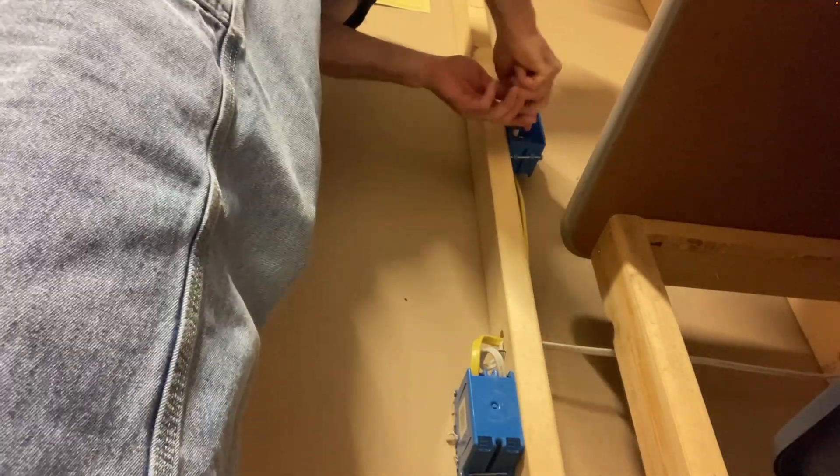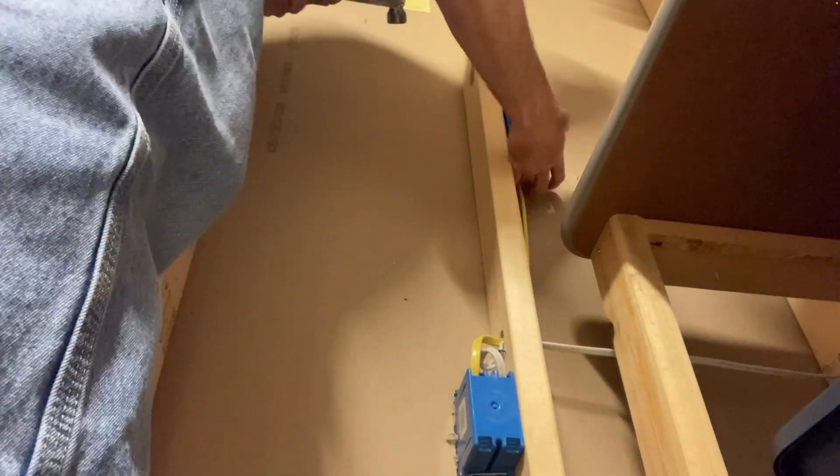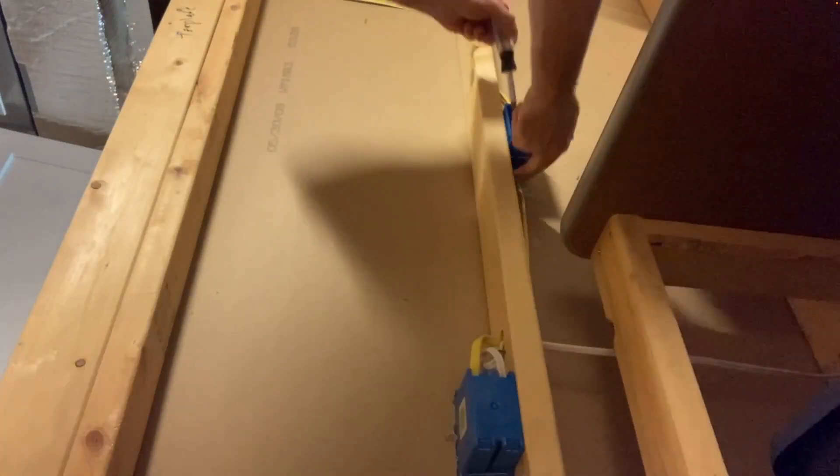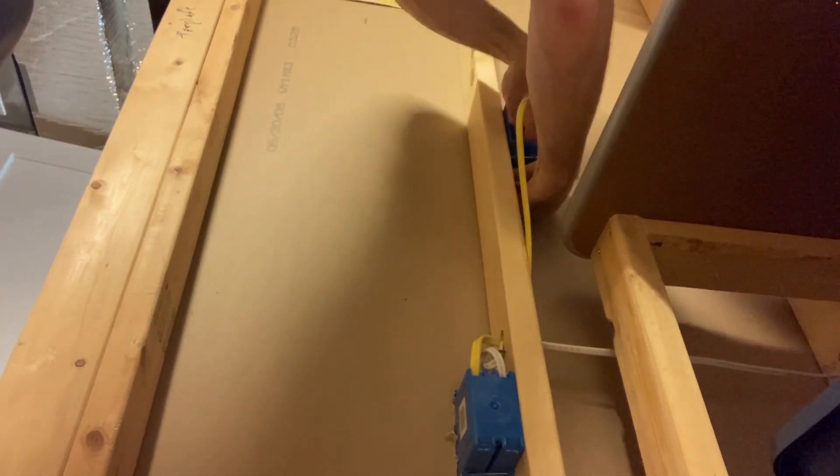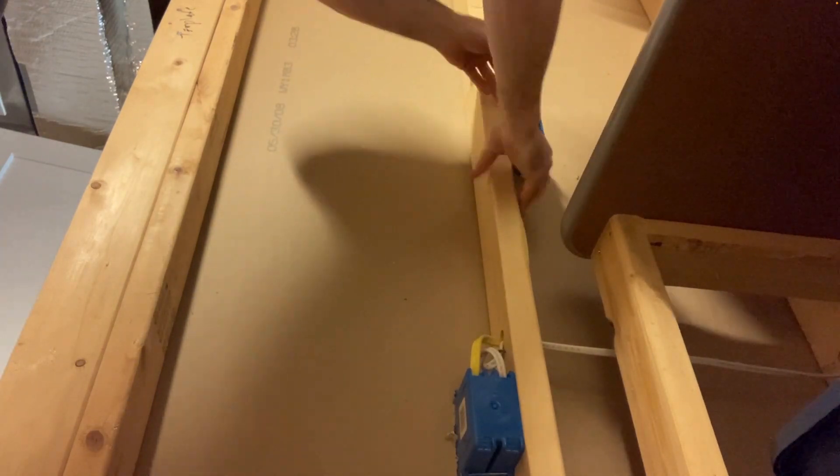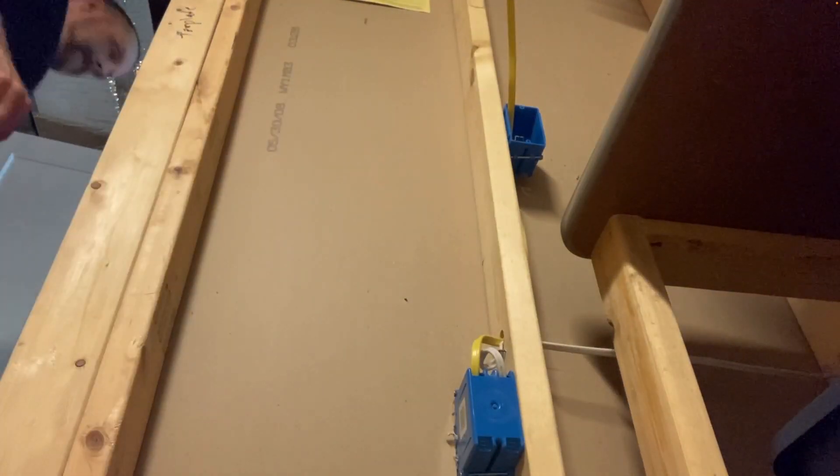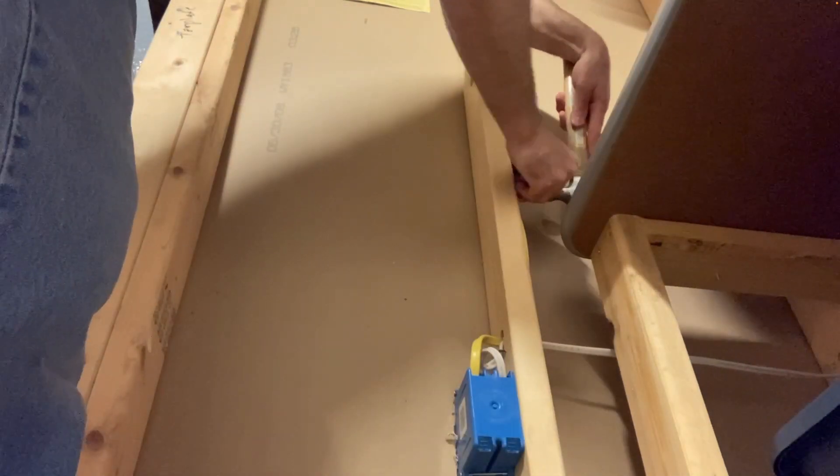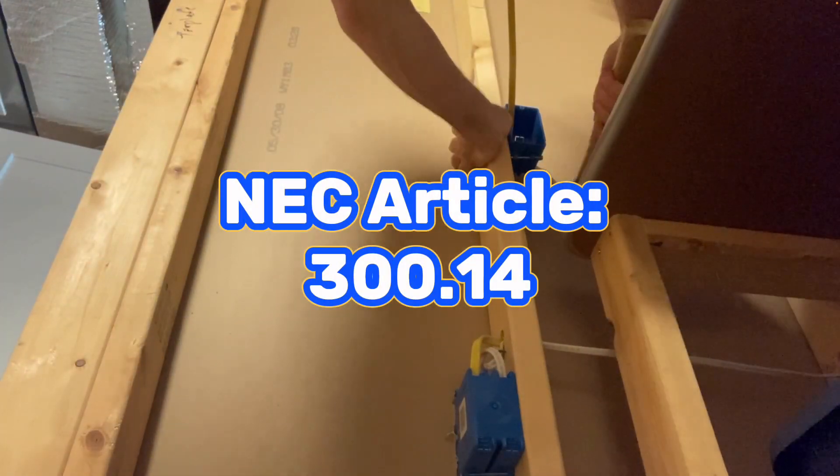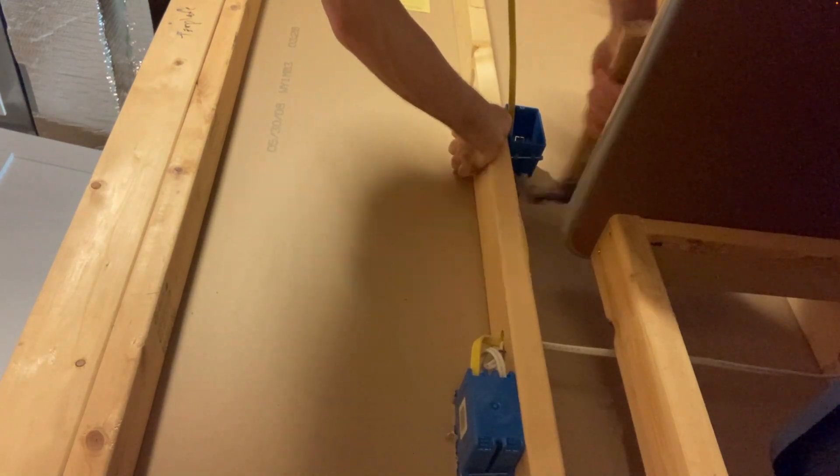I'm opening up the strain relief that grabs the Romex cable as you push it through the box. We'll feed our Romex through the new box. The NEC requires you want at least six inches of wire sticking out of the box to meet code.